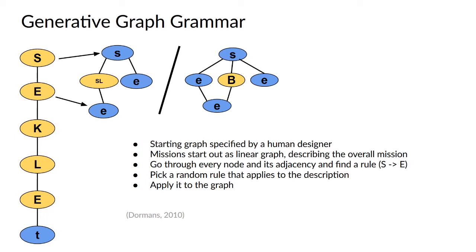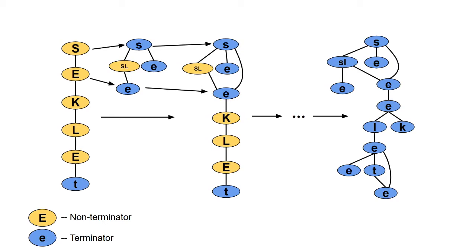To solve this problem, we use generative graph grammar, as it was used in the past to generate dungeon missions. The general idea is to have a starting graph specified by us or another human designer describing the overall mission. We go through every node and its adjacency, find a rule that matches, and apply it to the graph. One of the rules is applied to the starting graph to produce the middle graph, and we repeat this process for non-terminators until we get a graph full of terminators.